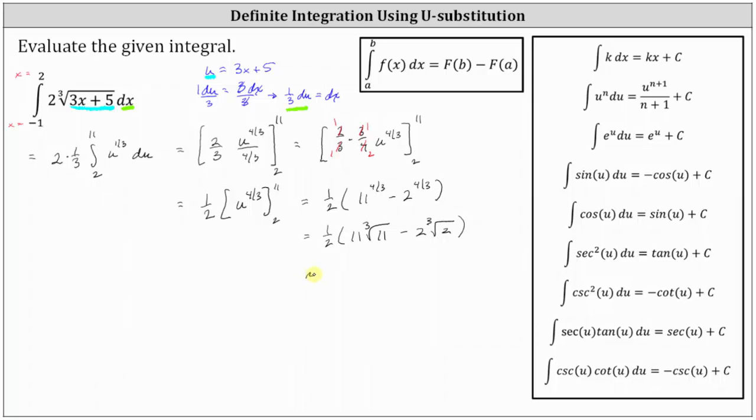And as a decimal approximation, we have approximately 10.9720 to four decimal places.